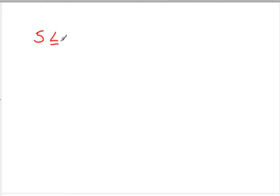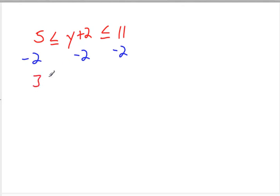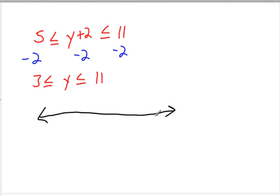Now let's say we have 5 is less than or equal to y plus 2 is less than or equal to 11. We subtract 2 from all three parts — the left, middle, and right. So we end up with 3 is less than or equal to y is less than or equal to 9. This is an AND statement because numbers can be both greater than or equal to 3 and less than or equal to 9. Only AND statements can be written as a single combined inequality. Graphing this, we put 3 and 9 on the number line with closed circles and shading in between.